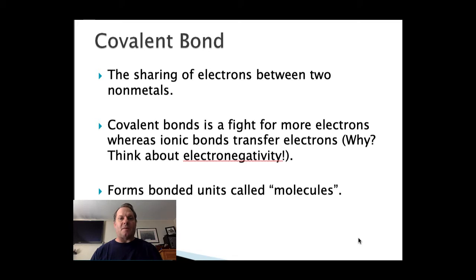So as we look at our PowerPoint, the covalent bond is the sharing of electrons between two non-metals. The covalent bond is a fight for more electrons, whereas an ionic bond is really the transfer. And when we think about why, we have to think about that electronegativity difference. Non-metals have high electronegativities. They have strong attractions for electrons. And they form this bonded unit called molecules.